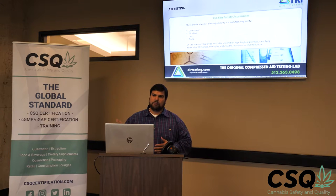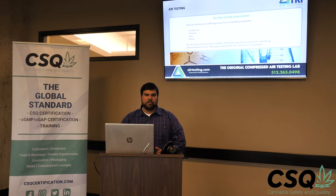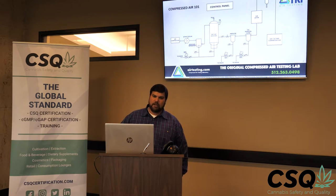You have compressors — high pressure, low pressure, depending on if you're packaging or using compressed air just for the grow rooms. Your air compressor takes all the room air and puts it down into like a bottle. During that condensing process, it creates a lot of heat, and that's where the water comes out — so you'll have water in your lines.